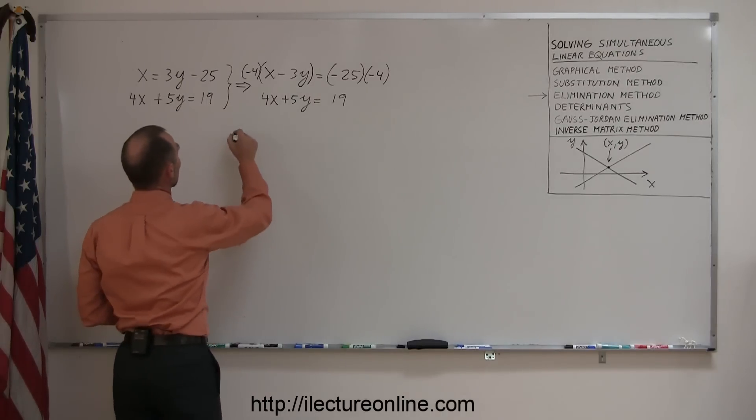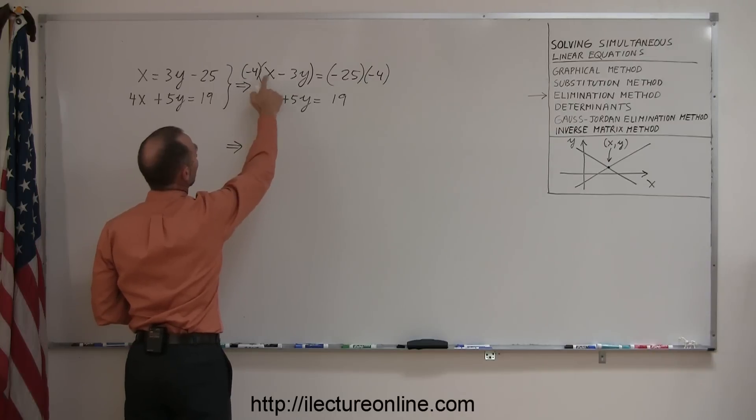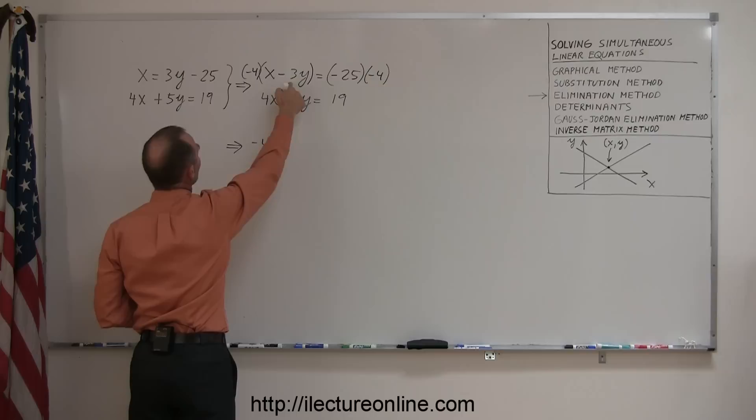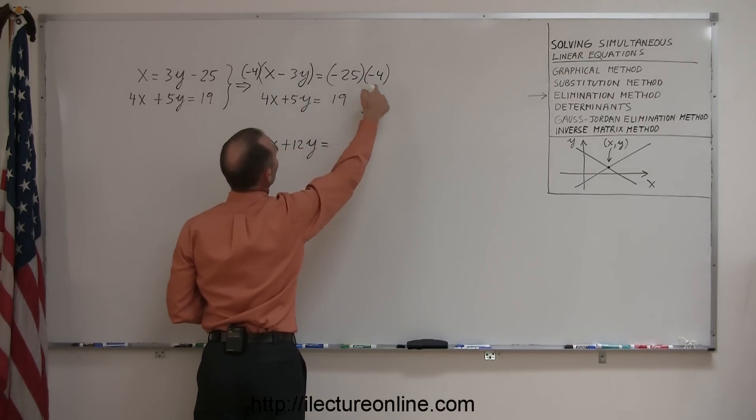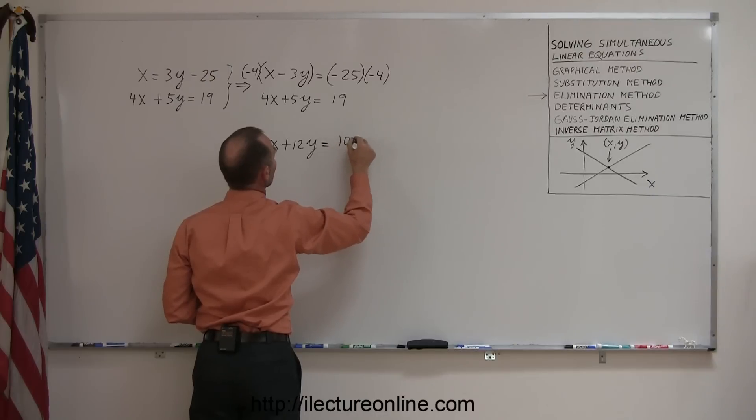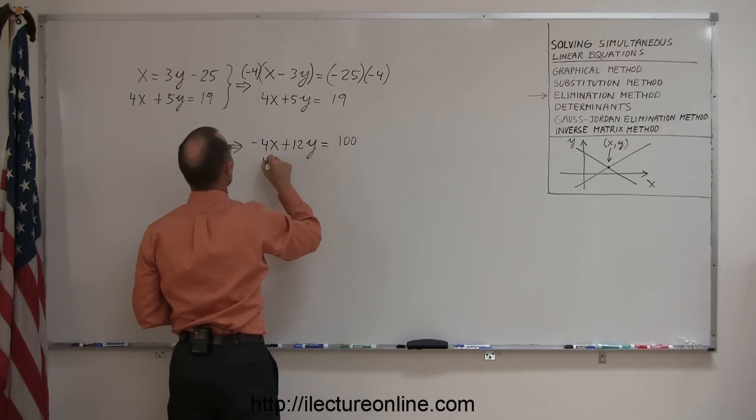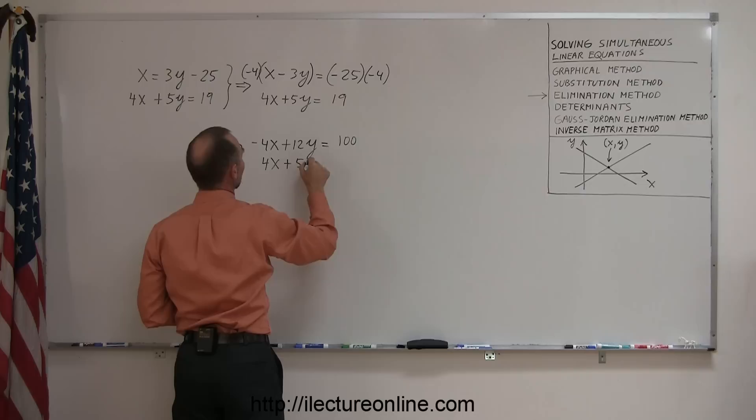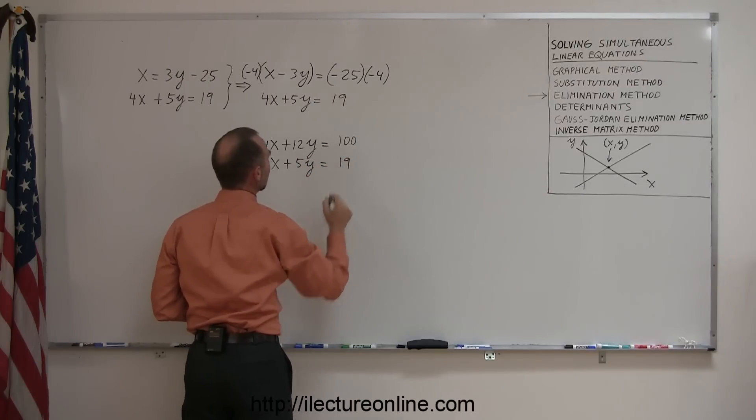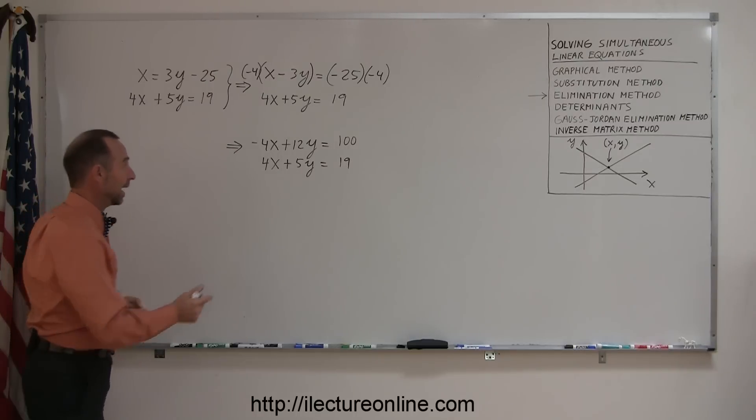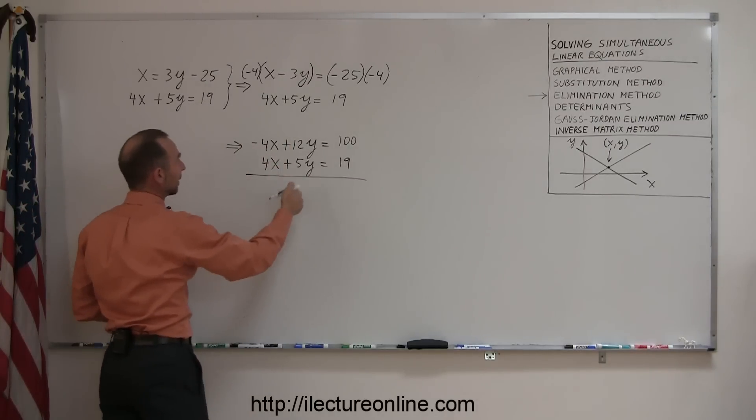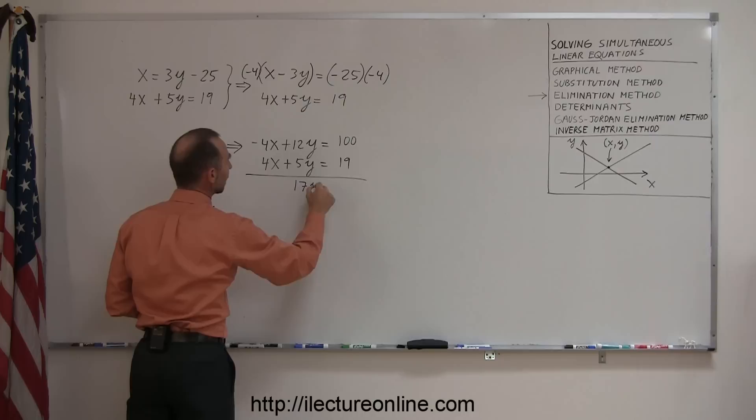So I'm going to draw the two equations again. The top equation, I multiply by negative 4 on both sides, gives me a minus 4x. A minus 4 times a minus 3 is a plus 12y equals, and a minus 25 times a minus 4 is a plus 100. The second equation, I don't touch, I just leave it alone. So it's 4x plus 5y equals 19. And I'm ready to go ahead and add the two equations. And as you can see, when I add them together, the x's drop out and I end up with 17y equals 119.